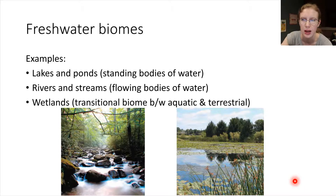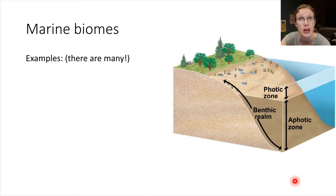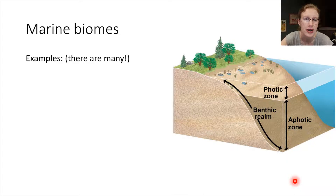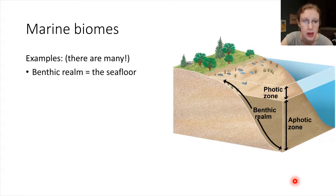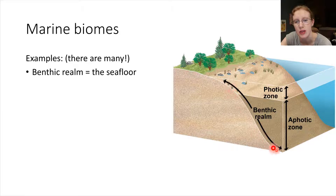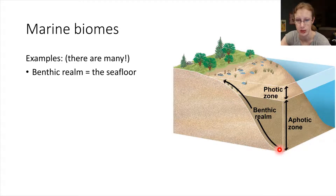Let's take a look at marine biomes — other sorts of aquatic biomes. Marine water is very salty, so it's very much a different biome even though it's still aquatic. Marine biomes can be categorized based on location in the ocean. The benthic realm refers to the sea floor — whatever is on the sea floor, whether in shallow or deep waters. There are specific organisms that live on that floor.